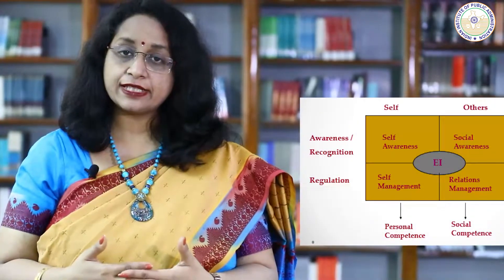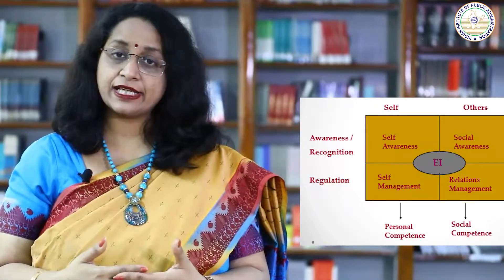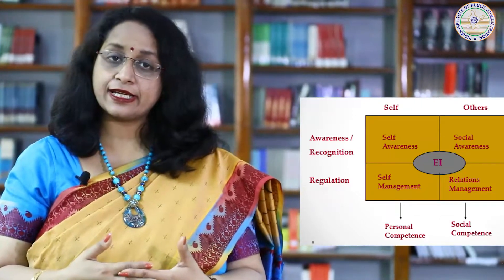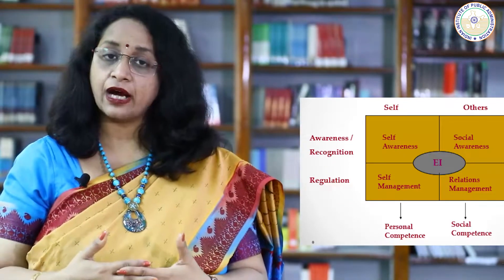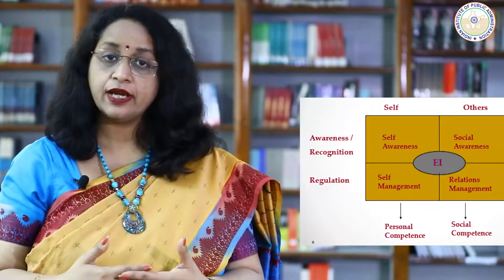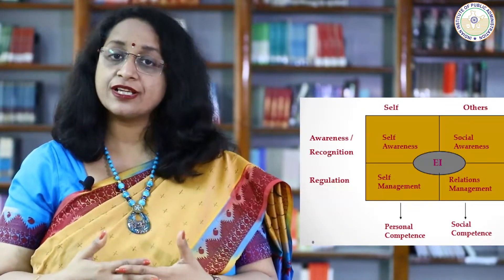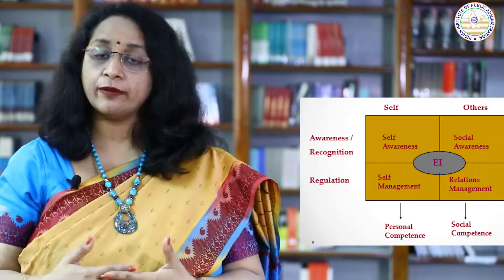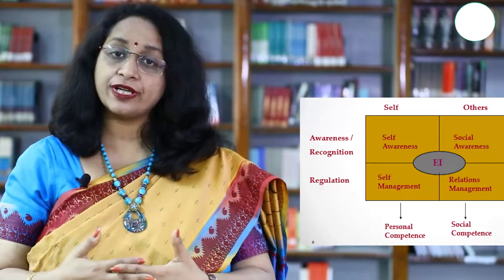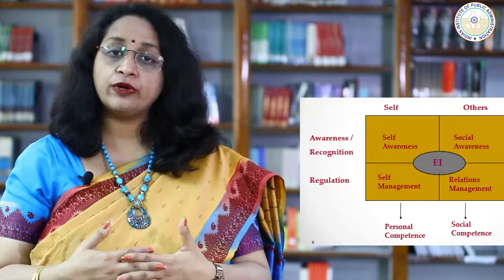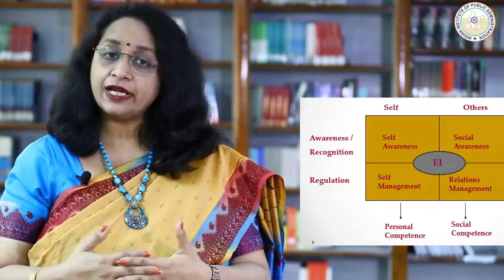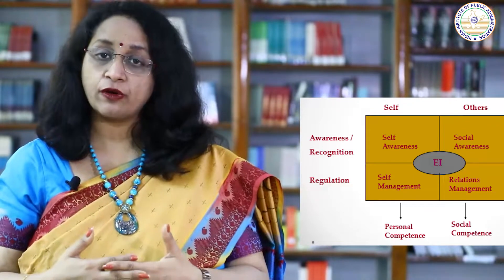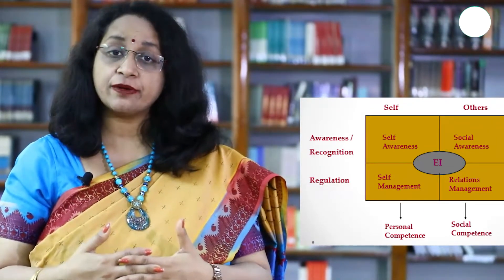Now let us see the domains of emotional intelligence. In this slide, we can see there is a window. On the x-axis there is self and others, and on the y-axis there is regulation and recognition. If we are able to recognize our emotions, we have self-awareness. If we are aware about emotions of others, then it is social awareness. If we are able to regulate our emotions, then it is self-management. And if we are able to regulate the emotions of others, that would become relationship management.